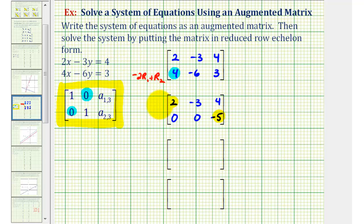So to continue this process, let's go ahead and replace row one with one-half times row one. That'll give us a one here. And we'll also replace row two with negative one-fifth times row two.